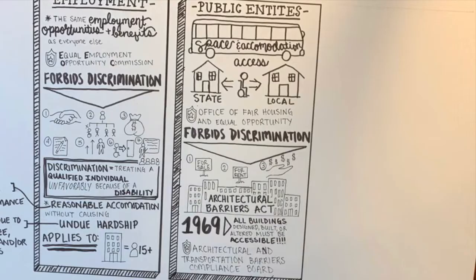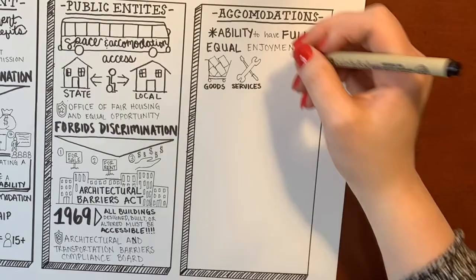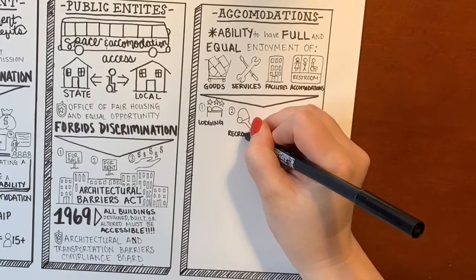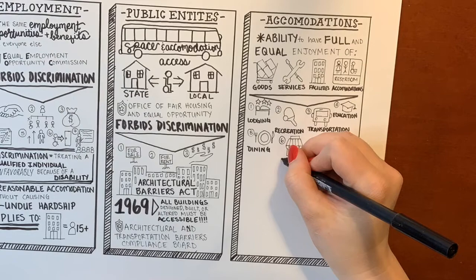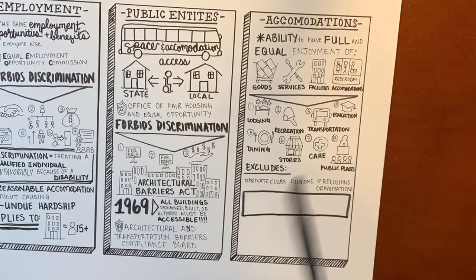A new business going into an older building can sometimes trigger changes. The Architectural Barriers Act is enforced by the Architectural and Transportation Barriers Compliance Board by investigating complaints — so a change isn't going to be made unless a complaint is made. Title III is arguably one of the most important parts of the ADA. It says that people with disabilities will not be discriminated against in their ability to have full and equal enjoyment of the goods, services, facilities, and accommodations of any public space. This applies to things like hotels, recreation, transportation, education, dining, stores, care providers, and public spaces. Exceptions include private clubs, unions, and religious organizations, which are not bound to Title III.